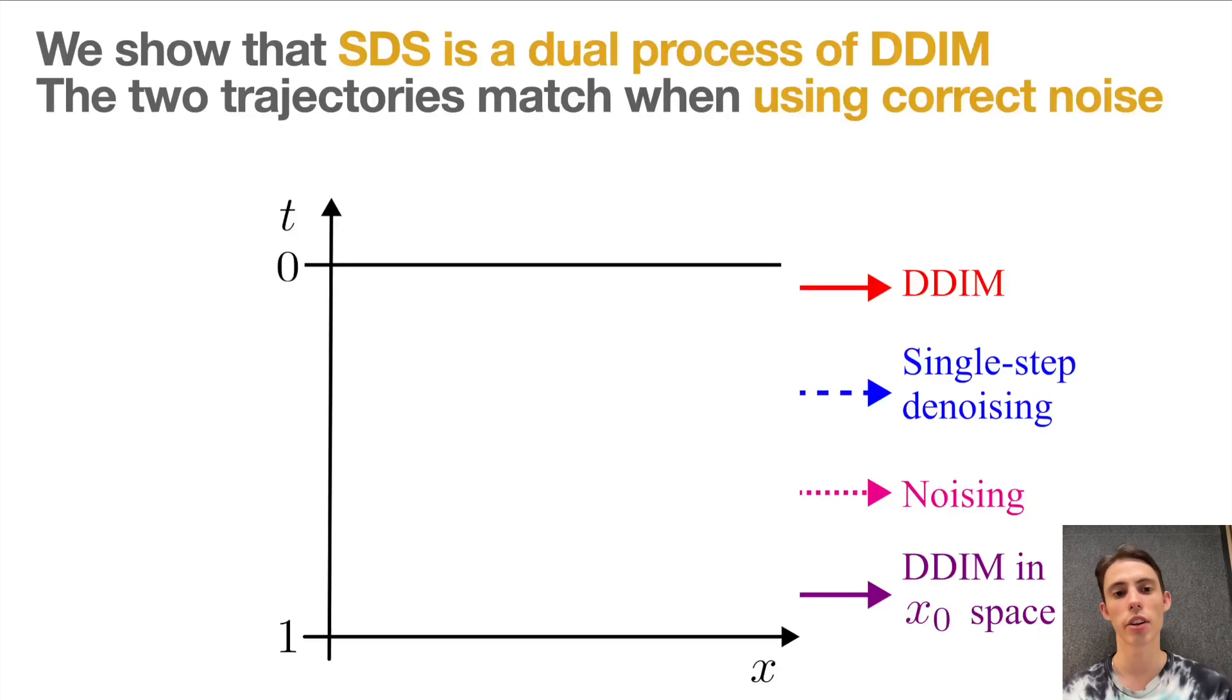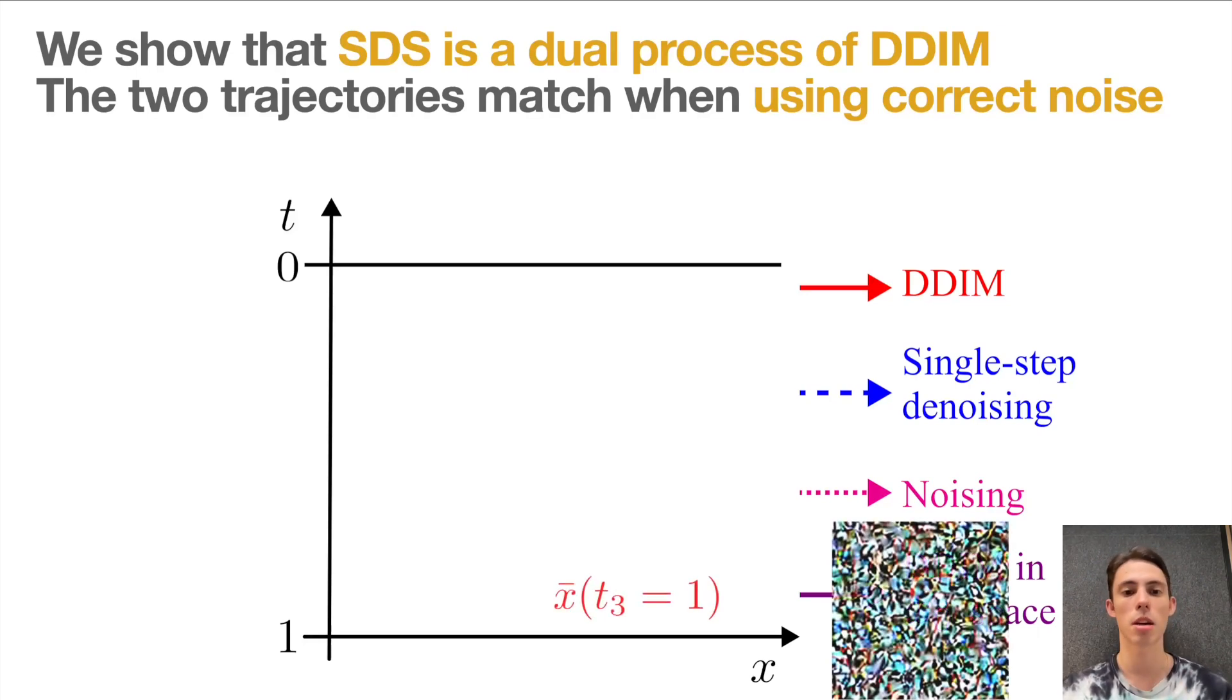So here, the horizontal axis represents the data dimension, while the vertical axis is a timestep of the diffusion process, with noise-free images all the way at the top, and completely noised images at the bottom.